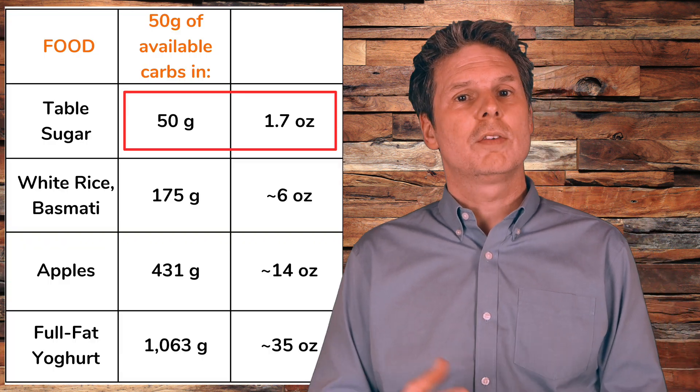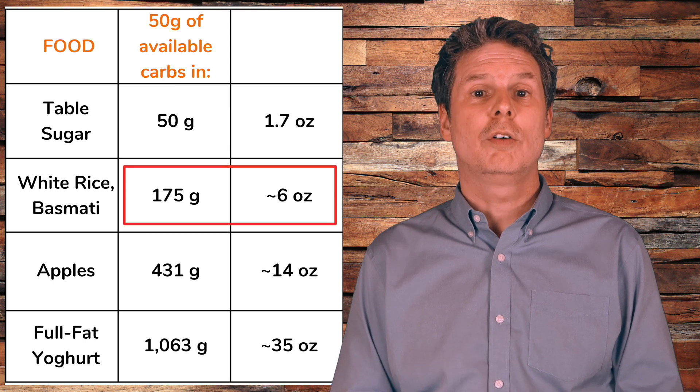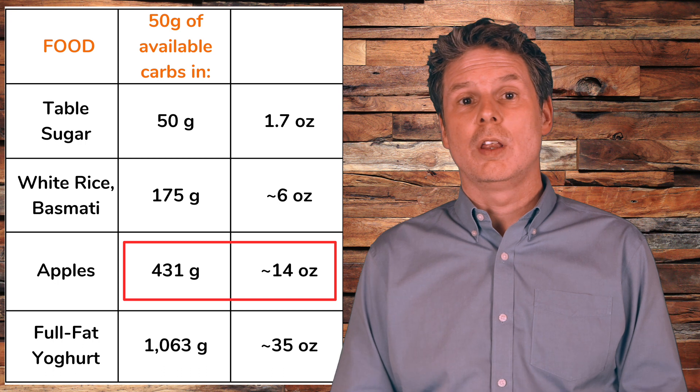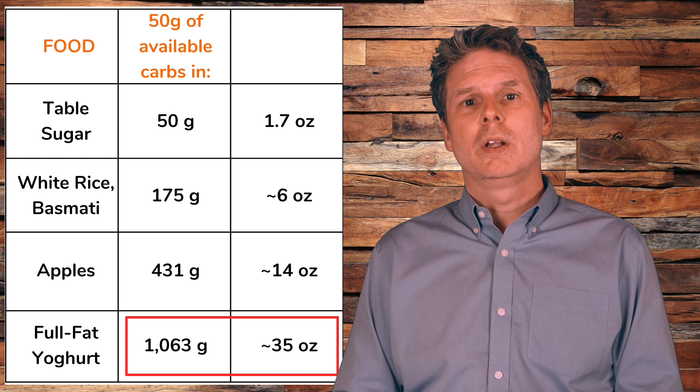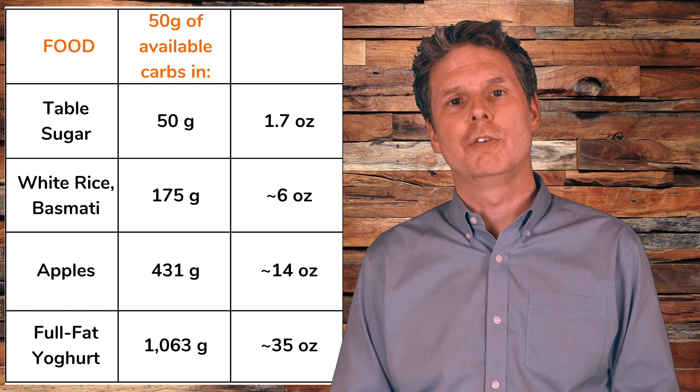Let's move on and talk about the glycemic load and how it's calculated. The glycemic index does have one important limitation: it is always based on 50 grams of available carbohydrates from each food, which makes it easy to compare foods assuming the same amount of carbohydrates are eaten. But foods differ a lot in carbohydrate content — one would need to eat only small amounts of certain foods but unrealistically huge amounts of others to get to 50 grams of available carbohydrates. For example, you'd need only 50 grams of table sugar, but 175 grams of white rice, 431 grams of apple, or more than one kilogram of full-fat yogurt to reach 50 grams of available carbohydrates, because full-fat yogurt contains less than 5% carbs.